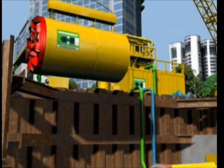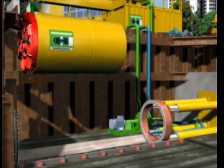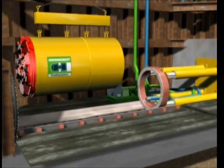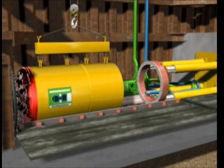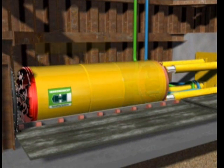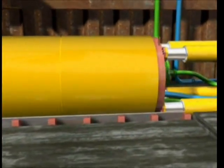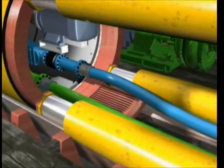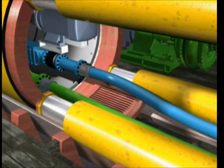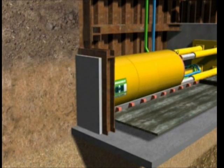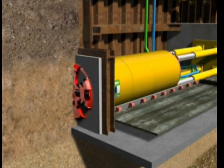Next the cutter head and the first machine pipe complete with the drive unit and steering cylinders are lowered and positioned in front of the launch seal. The second machine pipe is lowered and connected to the first machine pipe. The feed and slurry discharge lines are connected. The tunneling machine now carefully cuts through the low strength concrete block.